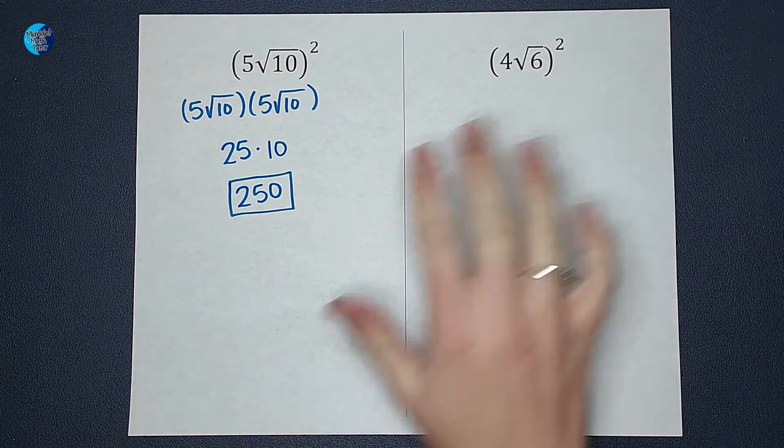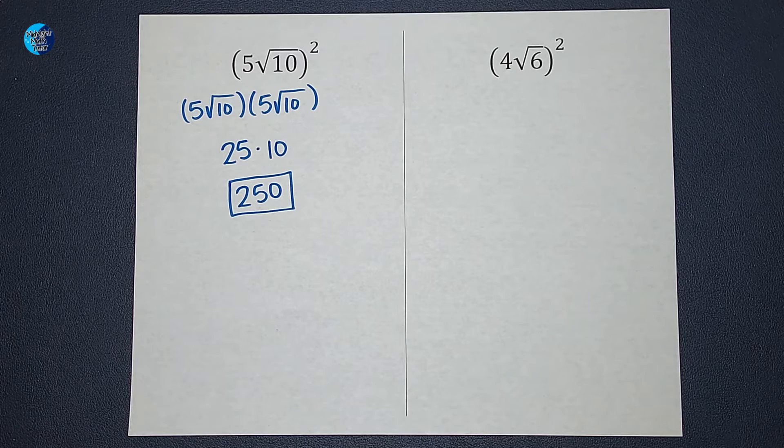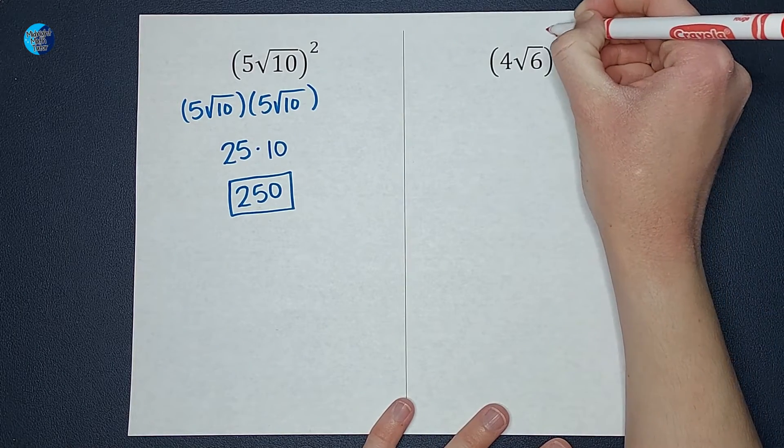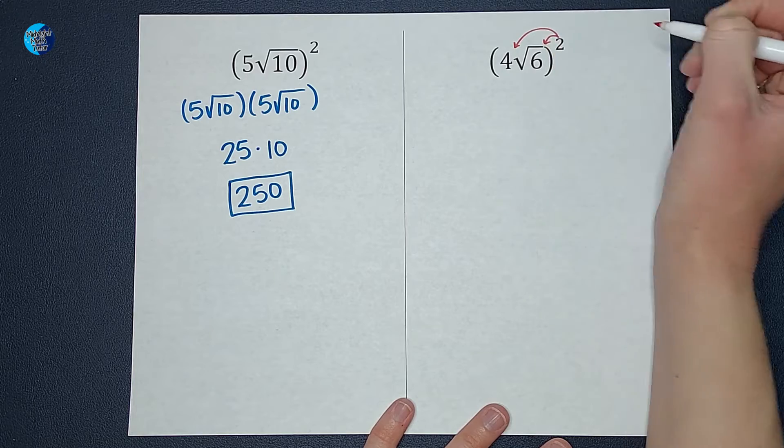Now there's another way we can think of it that we're going to look at over here. You can also think of it as the squared basically getting distributed to both of these.